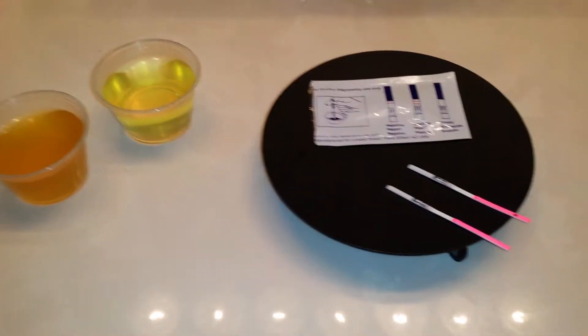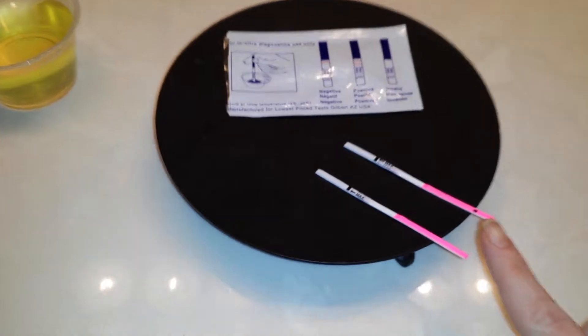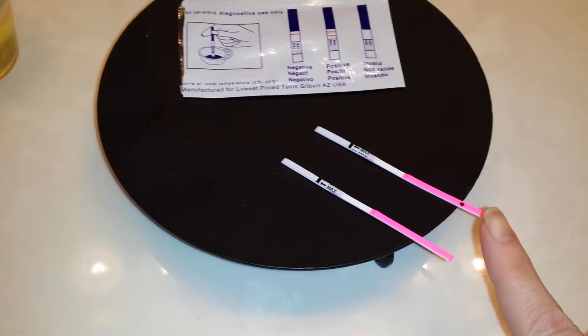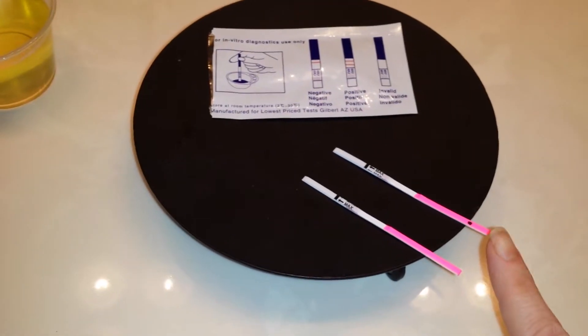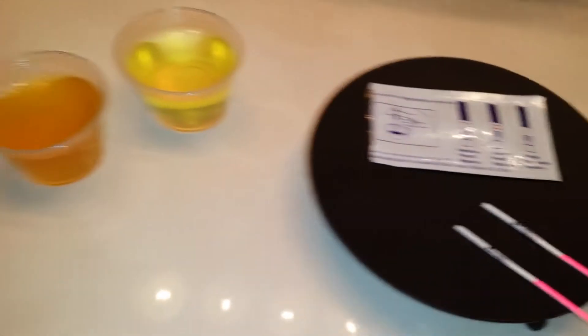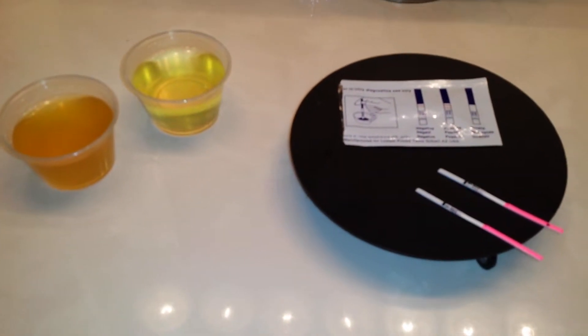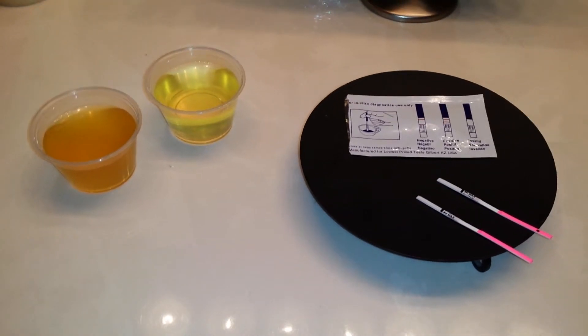So what I'm going to do today is take two ovulation test strips and I've marked one of them with a black dot. That's going to be the one that I dip into the diluted urine and this one will be the concentrated urine.